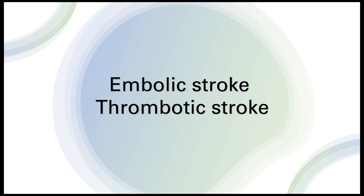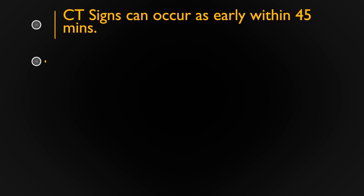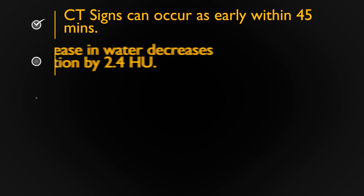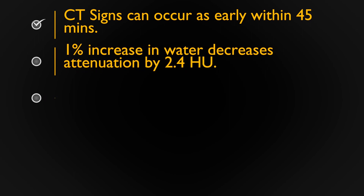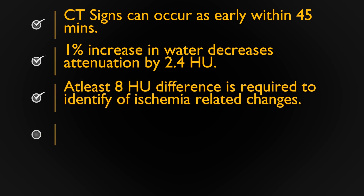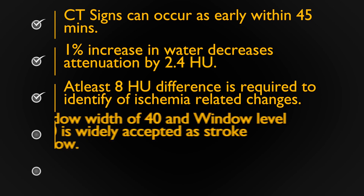Stroke imaging can be performed with either CT or MRI. MRI is more sensitive in diagnosing acute ischemic strokes; however, CT is more widely available and faster. CT signs can occur as early as within 45 minutes. A 1% increase in water within the cerebral parenchyma decreases the attenuation by 2.4 HU.